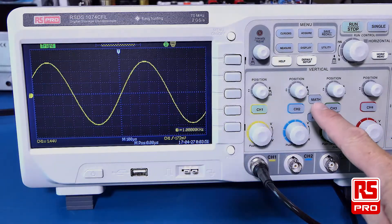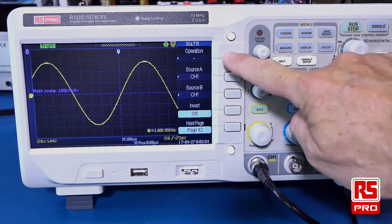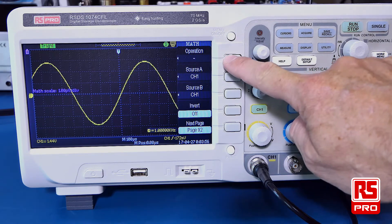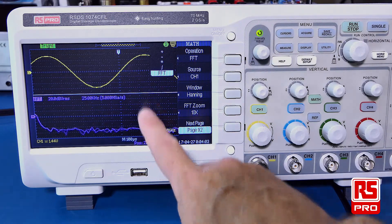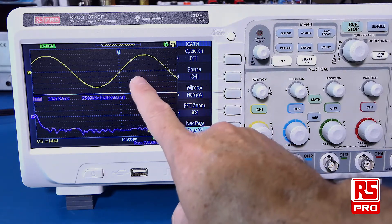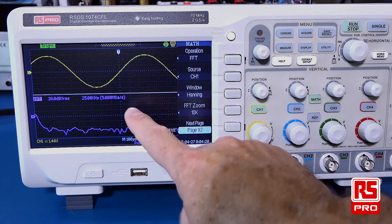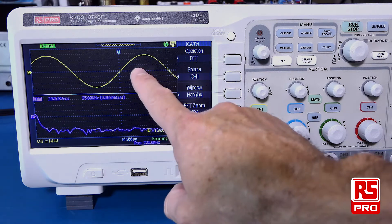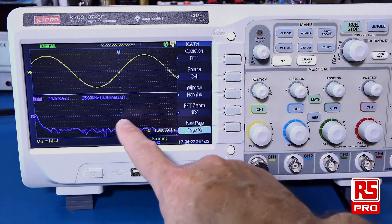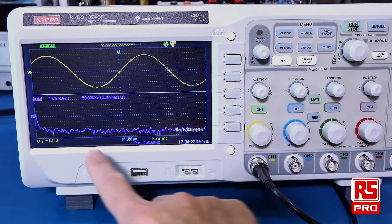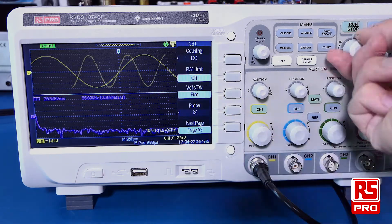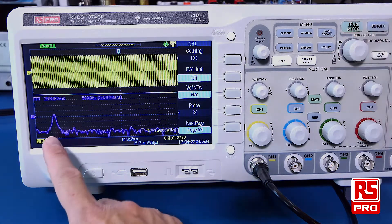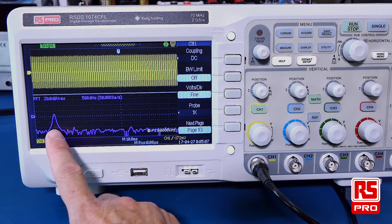The oscilloscope has built-in math functions. One very useful function is the FFT. In this case we're displaying the FFT and your original signal in a split screen. This allows you to view your signal both in a time domain and a frequency domain. You can make adjustments to allow you to see your FFT signal of interest and these adjustments can allow you to see what's happening in the frequency domain.